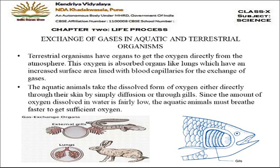Terrestrial organisms use atmospheric oxygen, while aquatic animals use oxygen present in water. Oxygen is more available in air than in water, so terrestrial organisms directly inhale atmospheric oxygen into the lungs, from where blood carries it to all cells. Aquatic animals have gills, which absorb oxygen by diffusion. Notably, aquatic animals breathe faster than terrestrial ones because oxygen is present in lesser amounts in water, so they must breathe faster to get a continuous supply of oxygen.